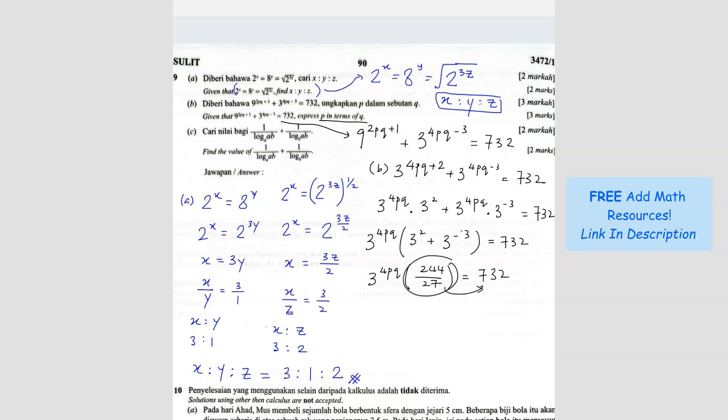So I bring this over, it becomes divide. So 732 divide by 244 over 27, I will get 81. So 3^(4pq) equals 3 to the power 4. In other words, these two are the same. 4pq equals to 4, so pq equals to 1. What are we finding for? We are finding express p in terms of q. So your answer is p equals to 1 over q.